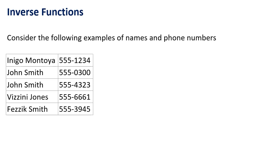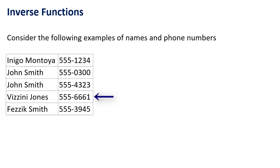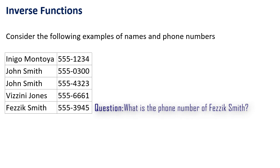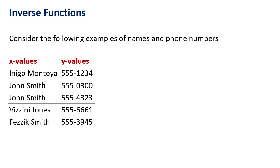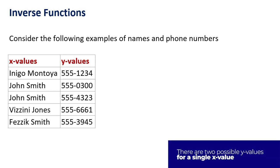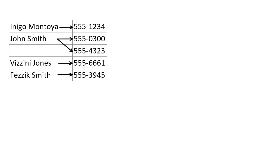Inverse Functions. Consider the following examples that associate names and phone numbers. There's Inigo Montoya 555-1234, John Smith 555-0300, John Smith 555-4323, Vizzini Jones 555-6661, and Fezzik Smith 555-3945. If I ask you what's the phone number of Fezzik Smith, you can tell me very easily: 555-3945. But if I ask you what's the phone number of John Smith, you can't tell me right away — there are two possibilities. If I think of the names as x values and the phone numbers as y values, there are two possible y values for the same x value when x is John Smith. Normally we only list an x value once, and using arrows to show the association, I can see that John Smith is associated with two phone numbers.